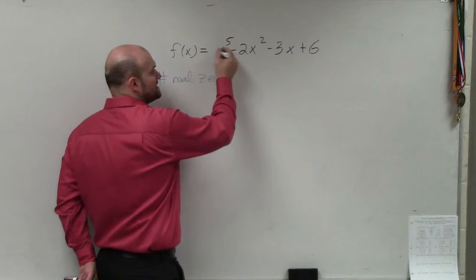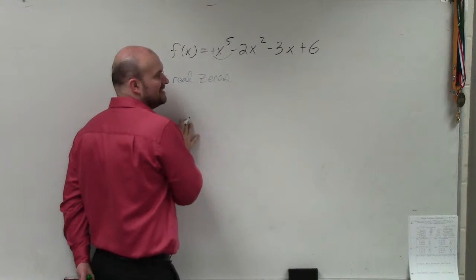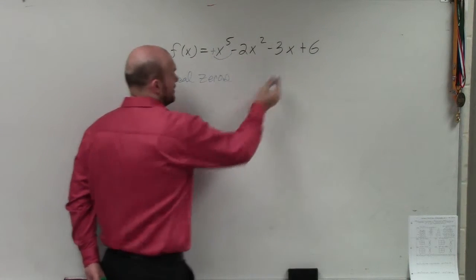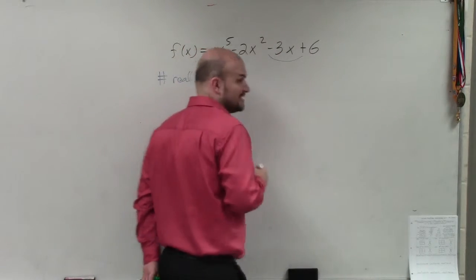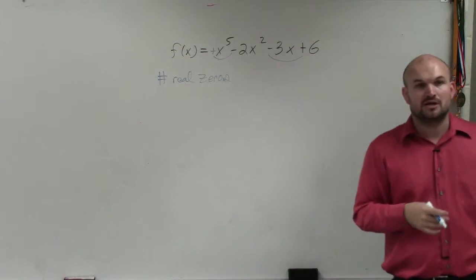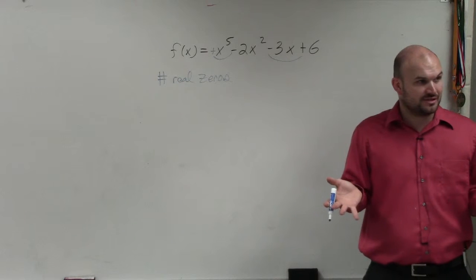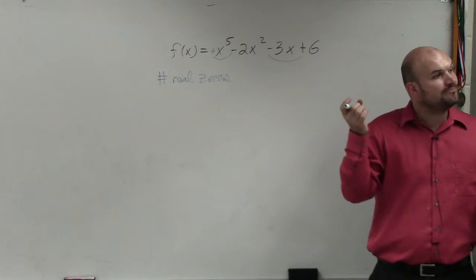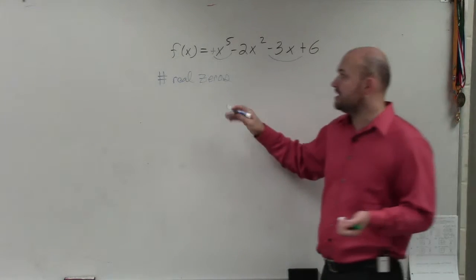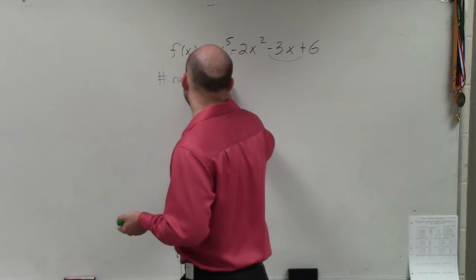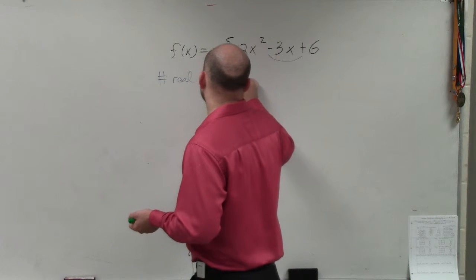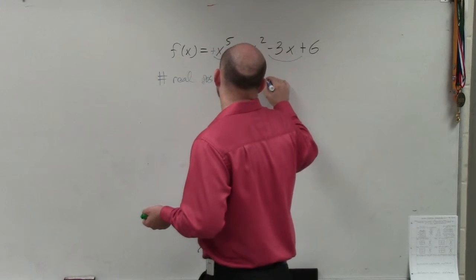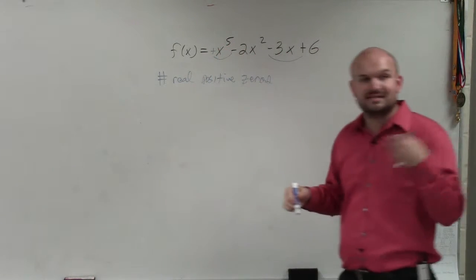So I go from positive to negative. You guys can see that's a sign change, right? I go from negative to positive. That's a sign change. So you count the number of sign changes. That's going to be the number of possible real positive zeros. So the number of real positive zeros is the number of sign changes minus an even number.